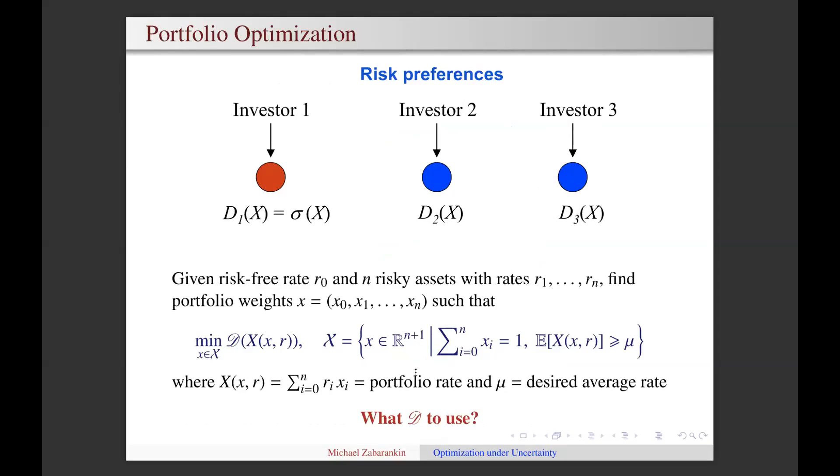The portfolio rate of return, which is the random variable X, is just the sum of assets' rates of return in portfolio weights. Then the portfolio optimization problem is a generalization of the well-known Markowitz mean-variance model. Here, an investor minimizes a general deviation measure D in place of the standard deviation. The feasible set X is determined by the budget constraint, which says that portfolio weights should sum up into one, and by the constraint on the desired expected rate of return. If short positions are not allowed, then in addition, X1, X2, and so on, XN should be non-negative.